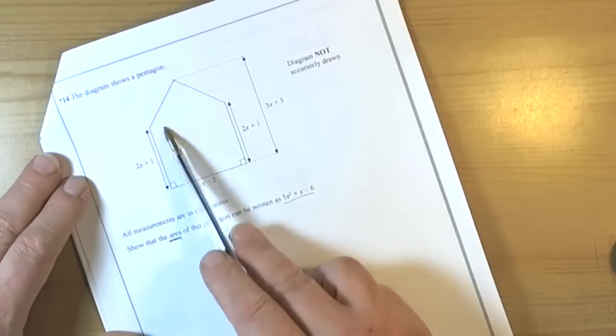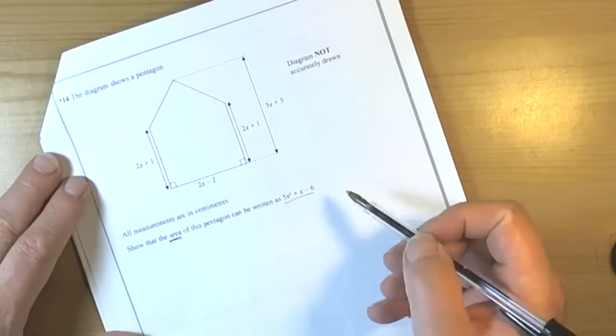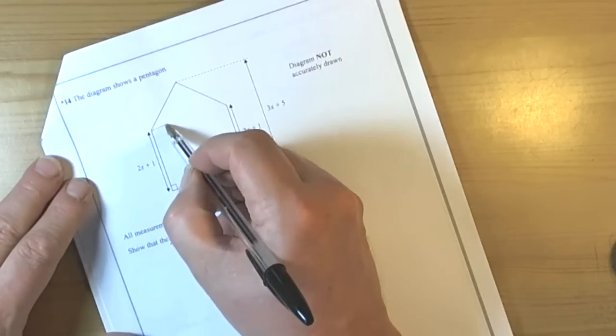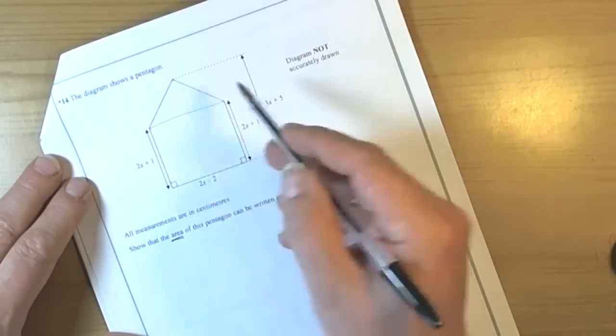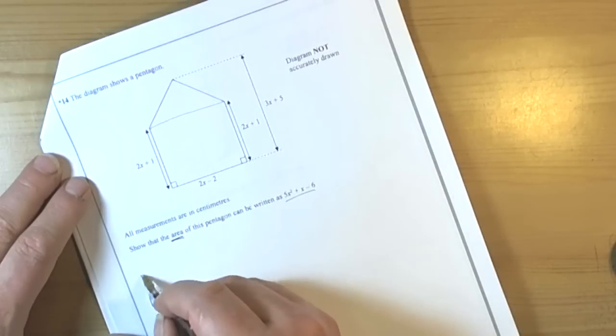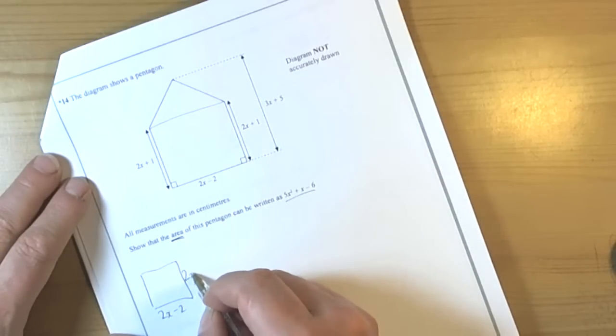So literally we've got this pentagon and we can see quite quickly that it would break down very simply into a rectangle and a triangle. So remembering that the rectangle has a width of 2x minus 2 and a height of 2x plus 1.